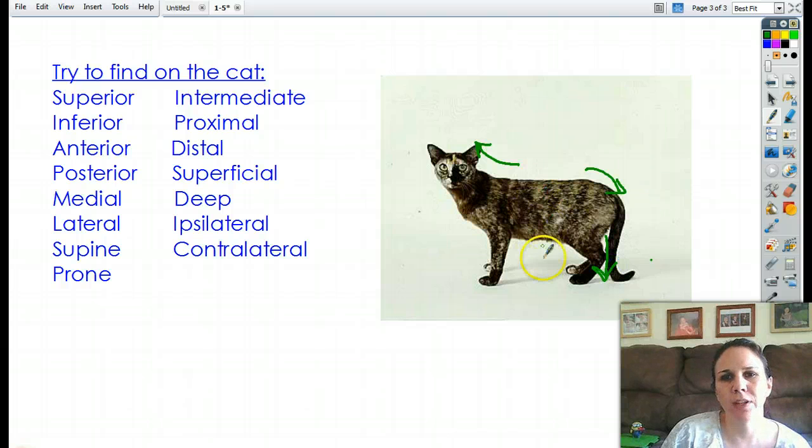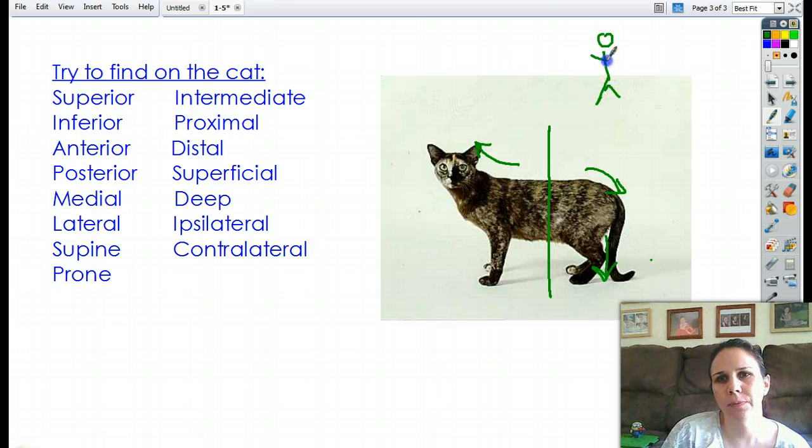So you kind of imagine that the cat is cut in half this way. Now, on a four-legged animal, the transverse, remember, here's a little person right here, and we chop them in half. We call that horizontal, or the transverse, or cross-section. Well, notice on a cat, since they're bent over, their horizontal kind of becomes vertical. And so I would get my cross-sectional slice vertically.